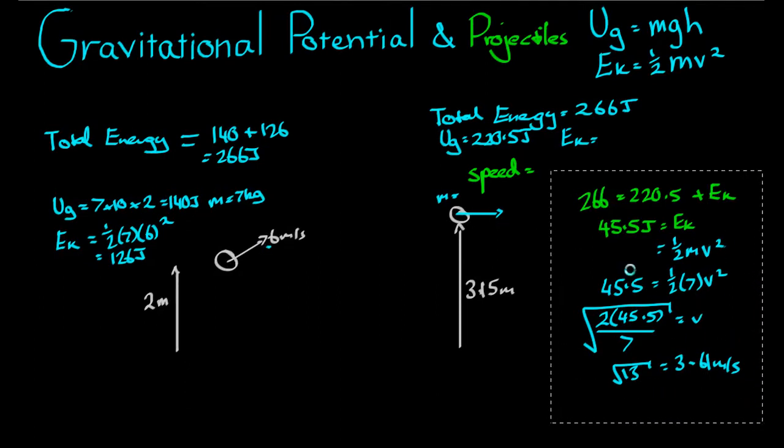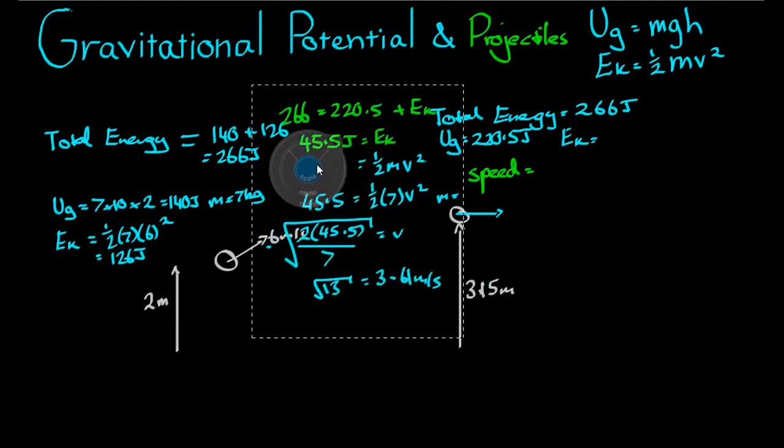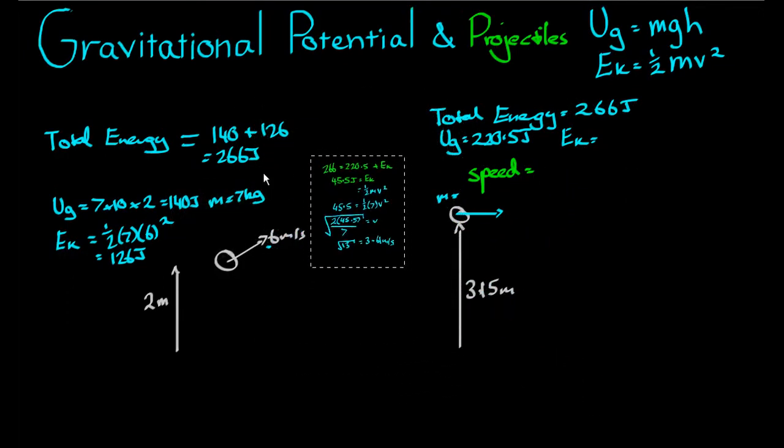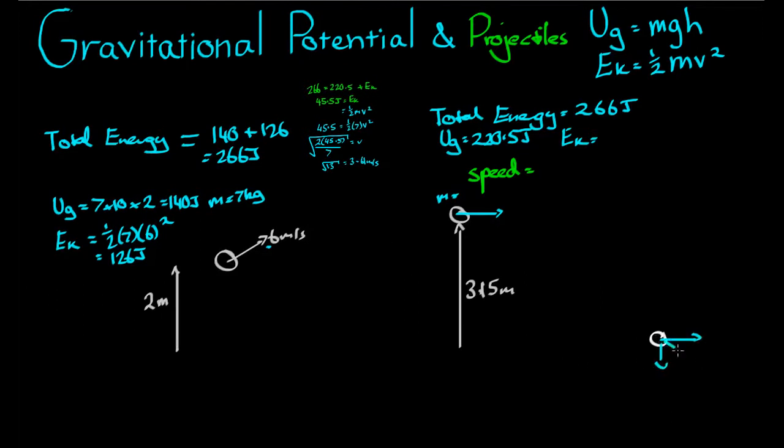The final part of this question that I want to solve is I want to find the final landing speed of that object there. If anyone has gone through the projectile motion videos, we used to find the landing speed by finding the horizontal velocity and the vertical velocity, and then using Pythagoras to get that landing speed. We're going to use a different method now.